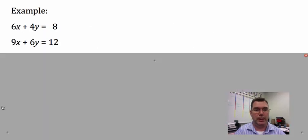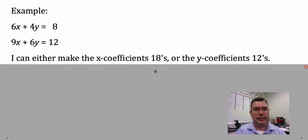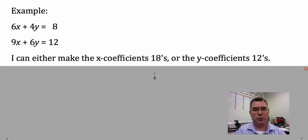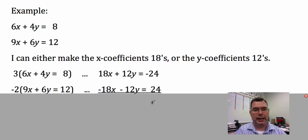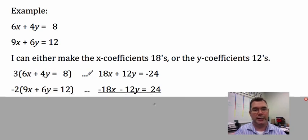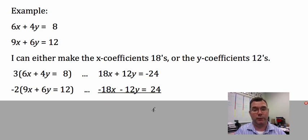Moving on to another example: 6x + 4y = 8 and 9x + 6y = 12. I can make the x coefficients 18s or the y coefficients 12s. I'll make the y coefficients 12. If I multiply the first equation by 3, I get 18x + 12y = -24. If I multiply the second equation by -2, I get -18x - 12y = 24.